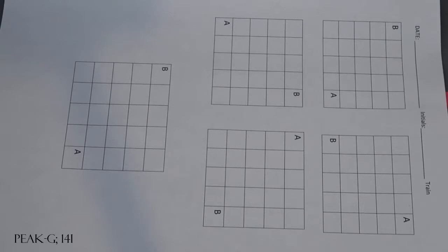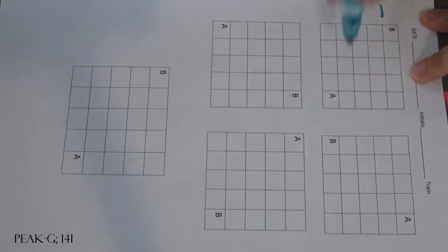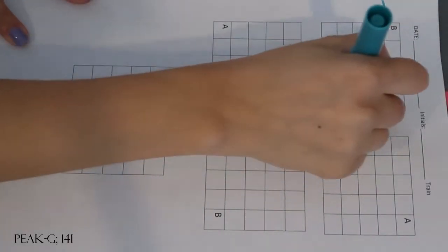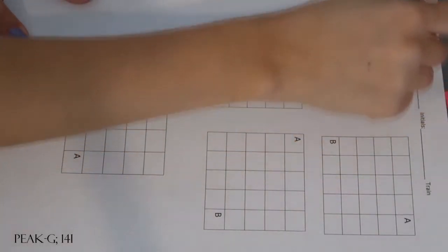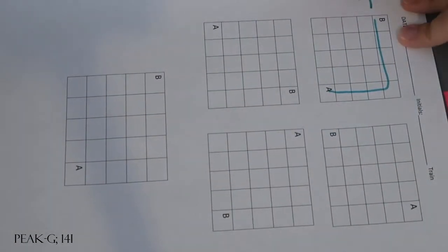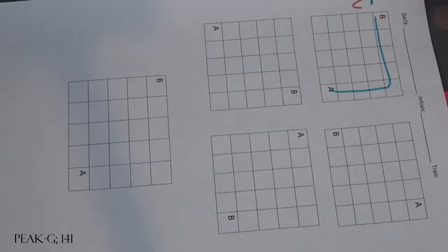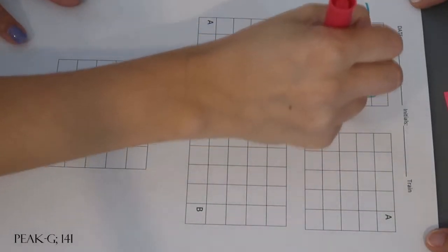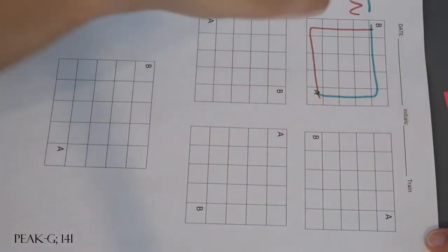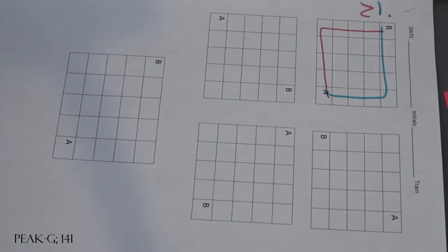All right, make a path from A to B. Awesome! Let's do another path, a different path from A to B. Good, making a new path.